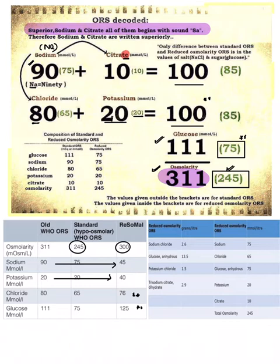This is the table - the old WHO ORS has osmolarity 311. Sodium 90, potassium 20, chloride 80, glucose 111, citrate 10 - making total 311. In reduced osmolarity ORS, sodium reduced by 15, chloride minus 15, glucose is 75. When someone talks about reduced osmolarity, two things have 75 - glucose and sodium when we subtract 90 minus 15.